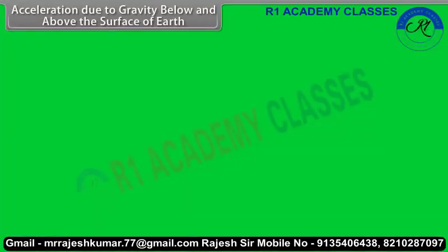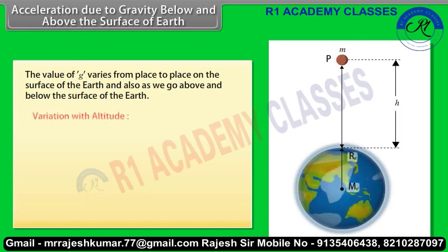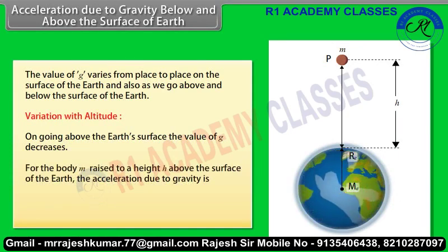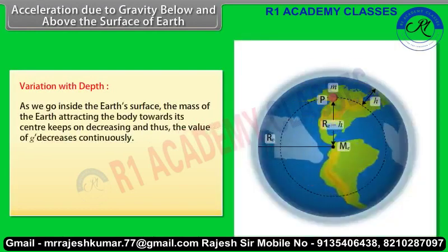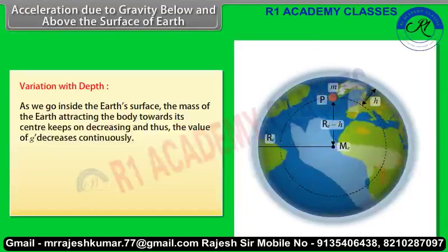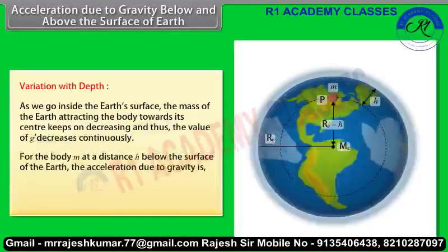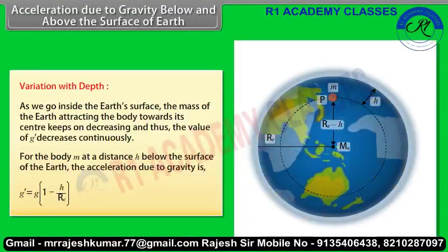Acceleration due to gravity below and above the surface of earth. The value of g varies from place to place on the surface of the earth and also as we go above or below the surface. Variation with altitude: going above the earth's surface, the value of g decreases. For a body raised to height h above the surface, g' = g(1 - 2h/R). Variation with depth: as we go inside the earth, the attracting mass decreases and thus g decreases continuously. For a body at depth h below the surface, g' = g(1 - h/RE).